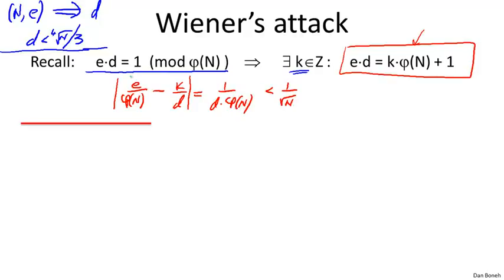Now let's stare at this fraction. The left-hand side E/φ(n) is a fraction we don't actually know — we know E, but we don't know φ(n). However, we have a good approximation: since φ(n) is very close to N, E/φ(n) is very close to E/N. So we have a good approximation to the left-hand side, namely E/N. What we really want is the right-hand side fraction K/D, because once we get that, it involves D and we'll be able to recover D.